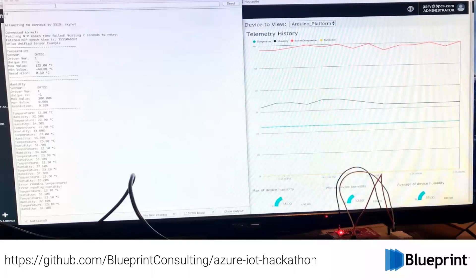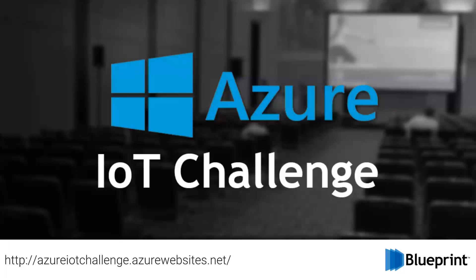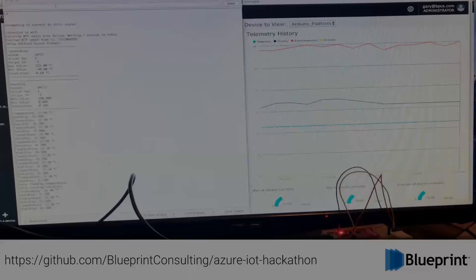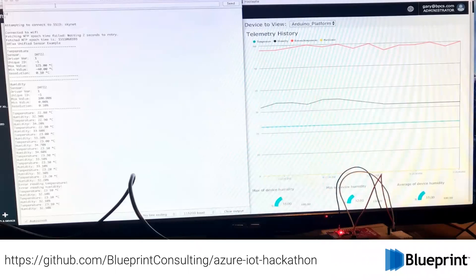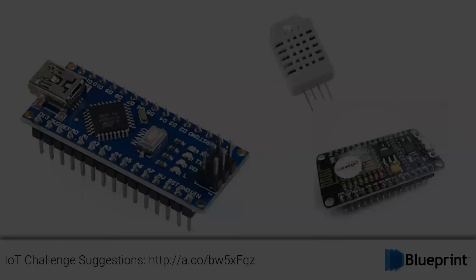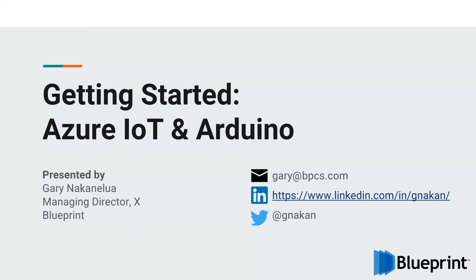For the challenge, once you get yourself up and running with all the parts and pieces, take a screenshot just like this. On the Azure IoT Challenge website, it'll tell you where to send it — put it together, have it sending some data, and send it over to us. First one to complete it wins. At this point, if anyone has any questions, we'd love to take them. That is the high-level overview of getting started with Azure IoT and Arduino — we'd love to see what you all put together, and we'll now open it up to questions.